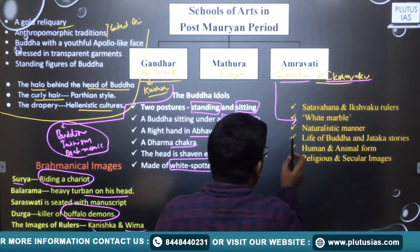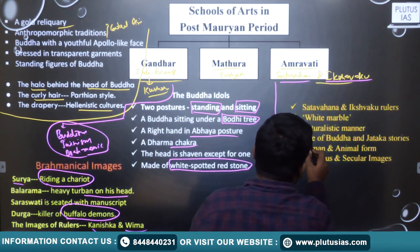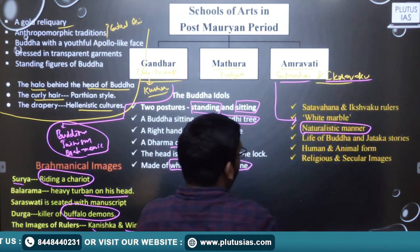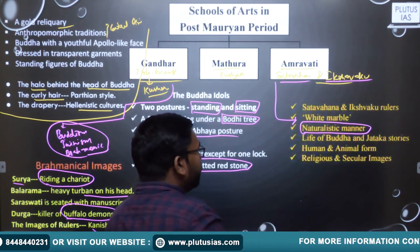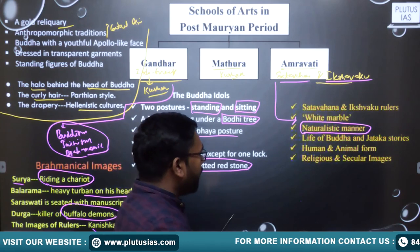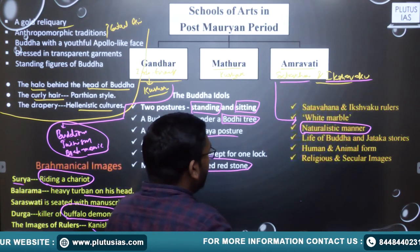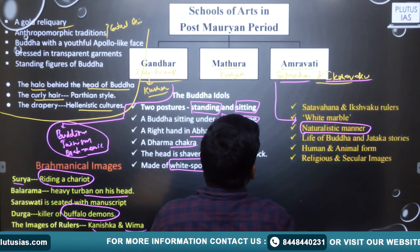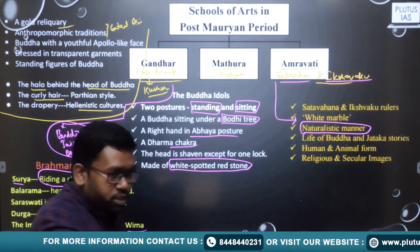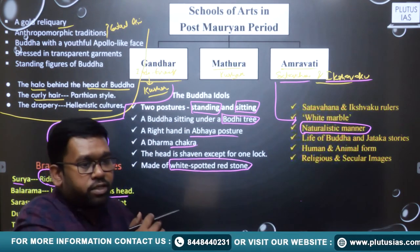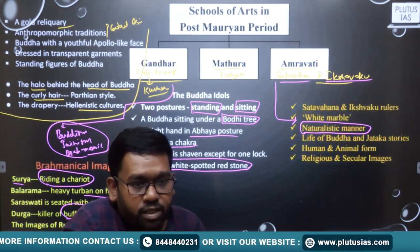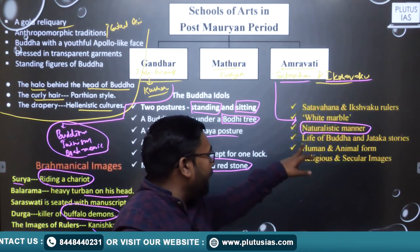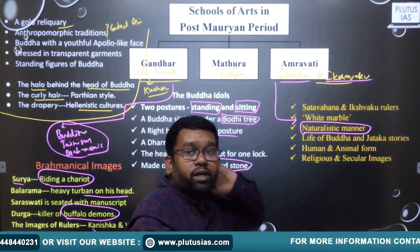Another important feature of Amaravati art is that it looks naturalistic in manner — the naturalistic idea, not spiritual, is shown. Most of the statues and structures are related to Buddhism and have been taken from the life of Buddha and Jataka stories. Buddha is seen both in human and animal form, especially in the Jataka stories which talk about the previous lives of Buddha.